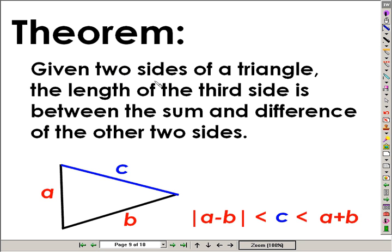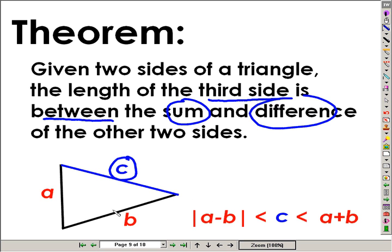The theorem states, given two sides of a triangle, the length of the third side is between the sum and the difference of the other two sides. And again, take the absolute value of the difference. So the third side, C, is between subtract A and B and add A and B. And that will give you the length of the third side.